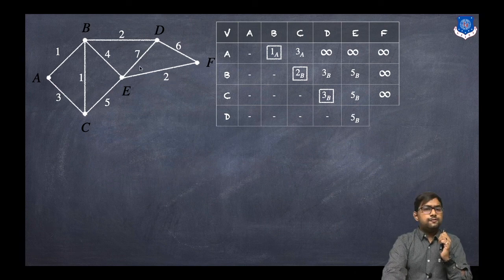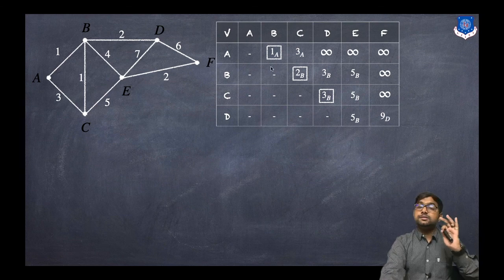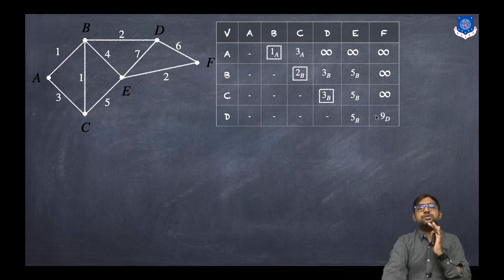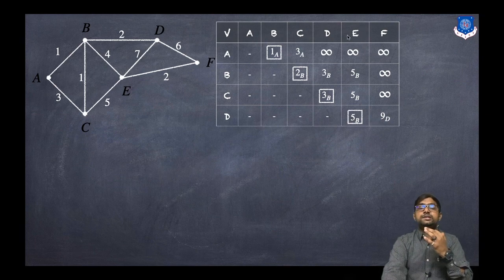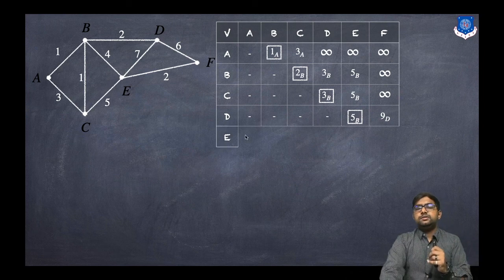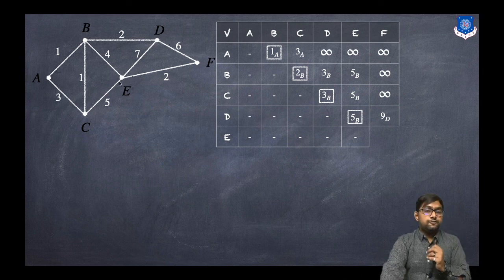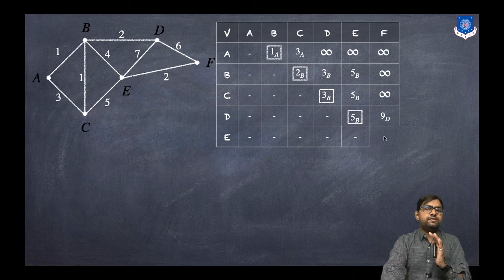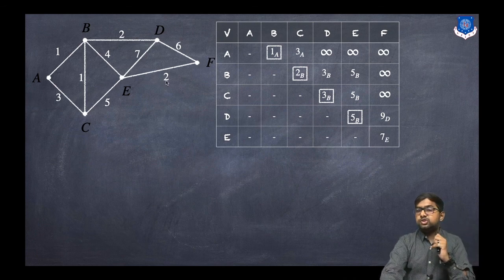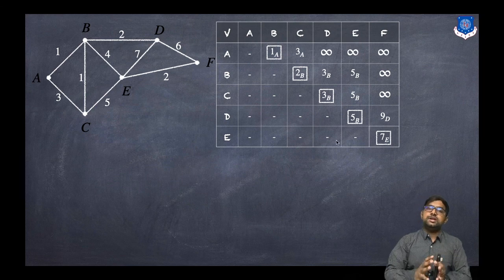D to F: the minimum edge weight is 6, and 6 plus 3 equals 9, traveling via D — so we write 9D. Among the remaining entries, the minimum is 5B, corresponding to vertex E. Now starting from E: previously visited vertices A, B, C, D are dash. E to F: the edge weight plus all previous weights gives 5 plus 2 equals 7, traveling via E — so 7E. Comparing 7 and 9, the minimum is 7, so we write 7E. This is the final row.